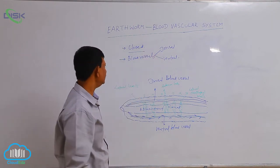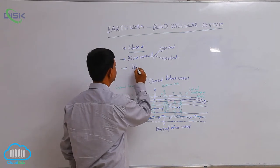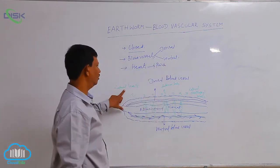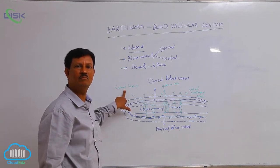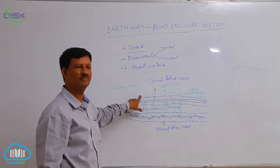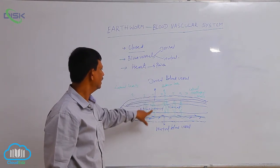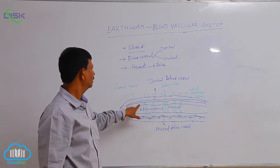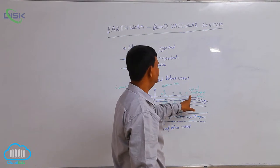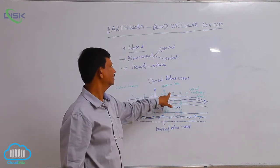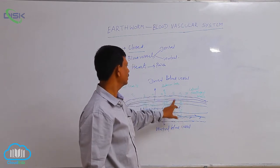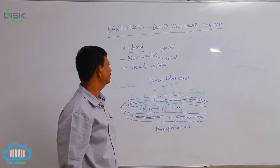These two main blood vessels are connected by hearts. There are four pairs of hearts found in earthworm, known as lateral hearts, situated on the lateral side of the body. The first pair is situated in the ninth segment and the second pair is also in the ninth segment. These two lateral hearts are connected to the dorsal and ventral blood vessels. The remaining two pairs are known as lateral esophageal hearts, situated in the twelfth and thirteenth segments, also connected to the dorsal and ventral blood vessels.